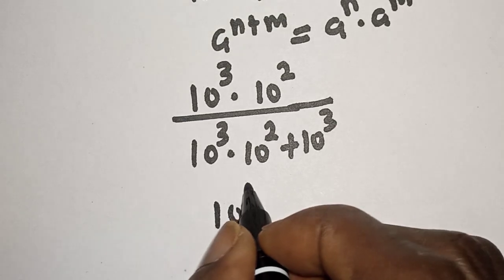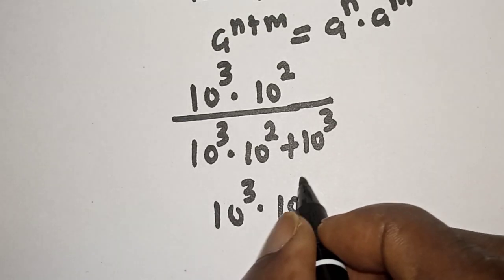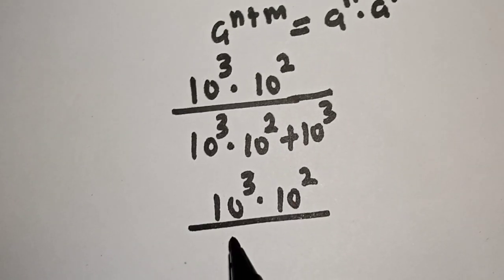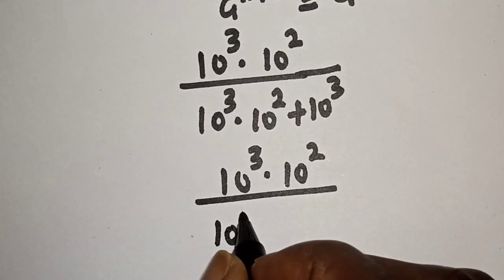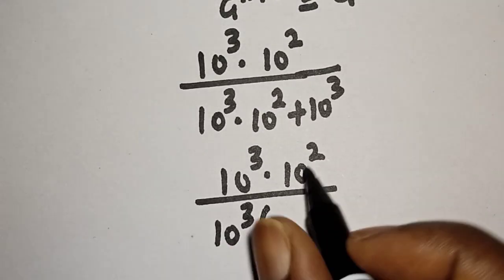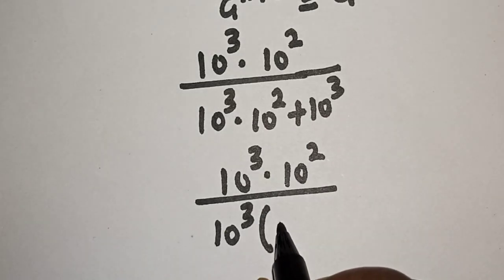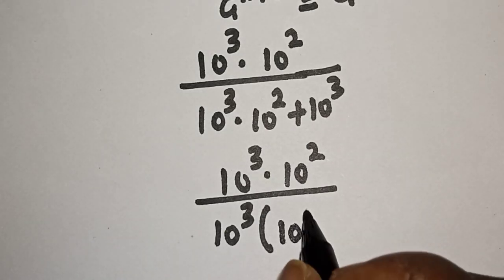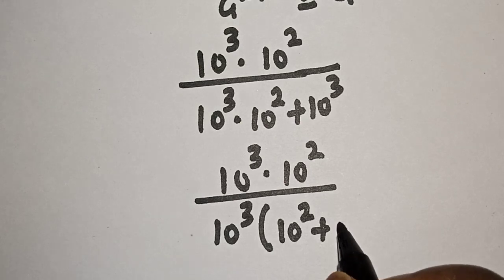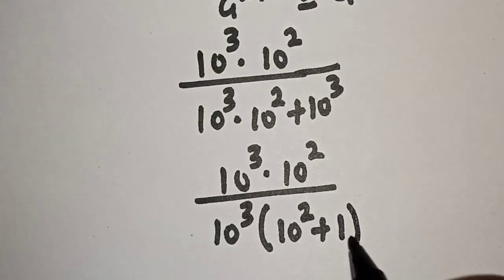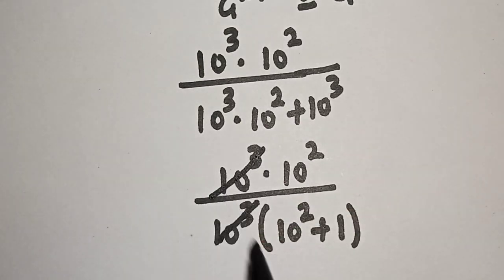We have 10 raised to power 3 multiplied by 10 raised to power 2, divided by 10 raised to power 3 bracket. Dividing this by this, we have 10 raised to power 2 plus 1, then this cancels with this.